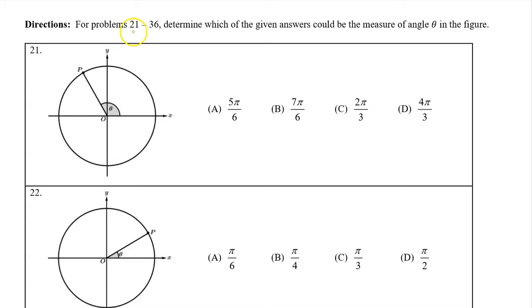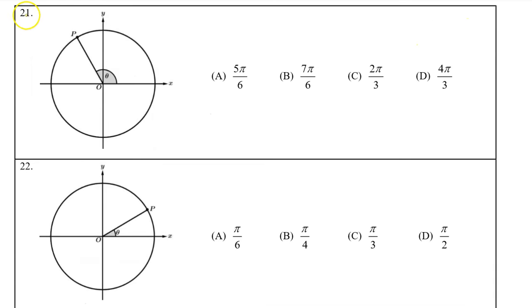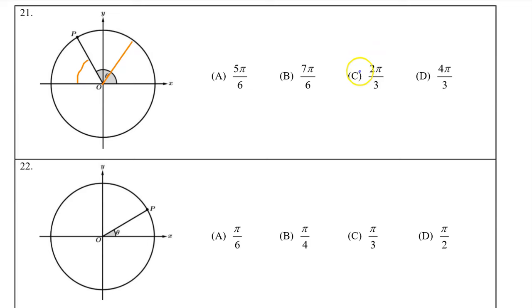For problems 21 through 36, determine which of the given answers could be the measure of angle theta in the figure. In number 21, this sector looks to be about one third of the semicircle. You can see it a little better if I draw another one in like this. So P is at a multiple of pi over 3. This is 1pi over 3 and this is 2pi over 3. So the answer is C.